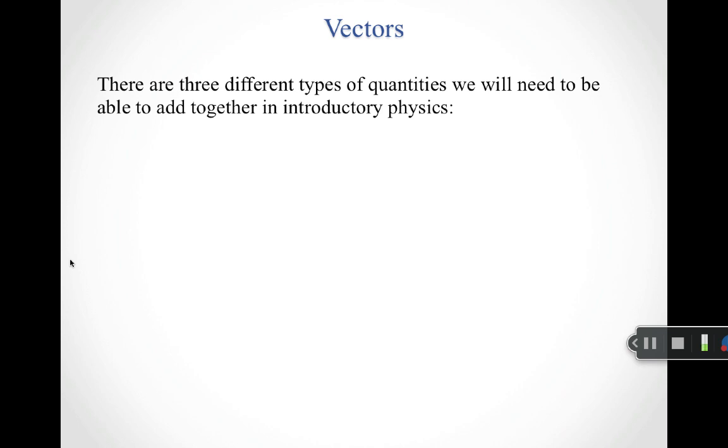In terms of what we're going to deal with in introductory level physics, basically there are three types of quantities that we're going to need to add together. We're going to add together scalars, we're going to add together vectors, and we're going to add together something known as phasors. For each of these, there's a difference in what matters.